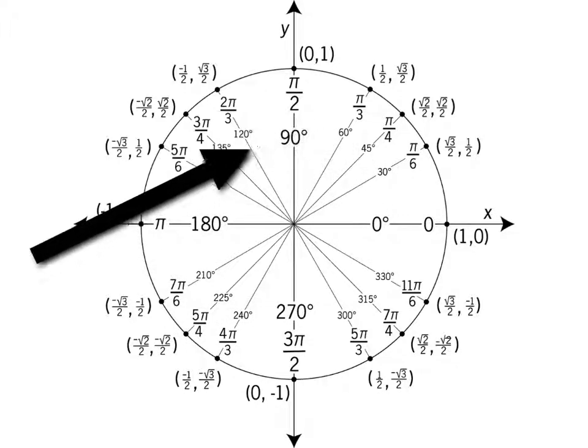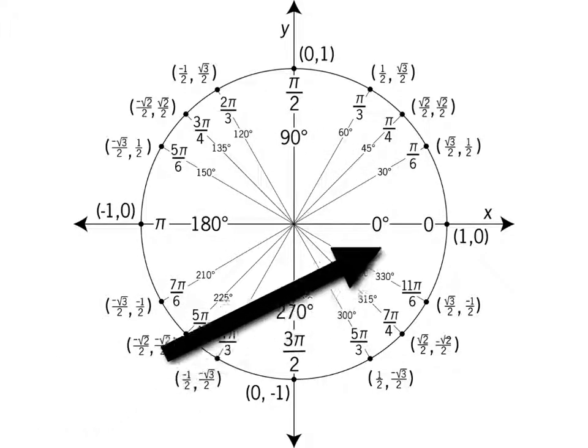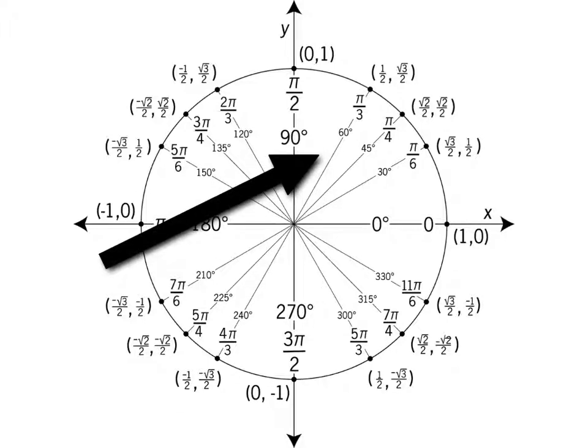This allows you to represent all those different degrees in one instead of a bunch of little mini triangles, like this 30-60-90 triangle, or this 45-45 triangle. Instead of having all these different triangles, they just put them together in a unit circle, and then you can see everything the same.